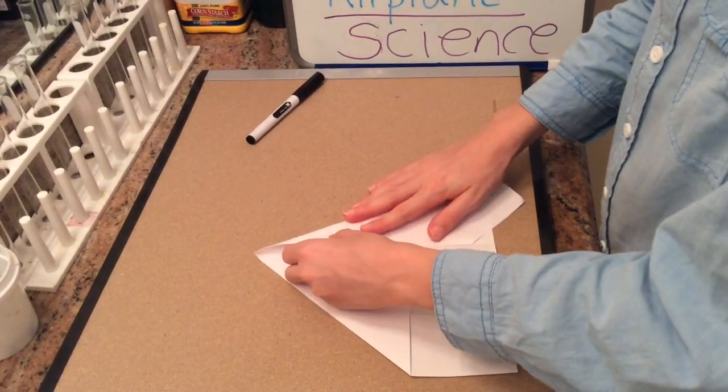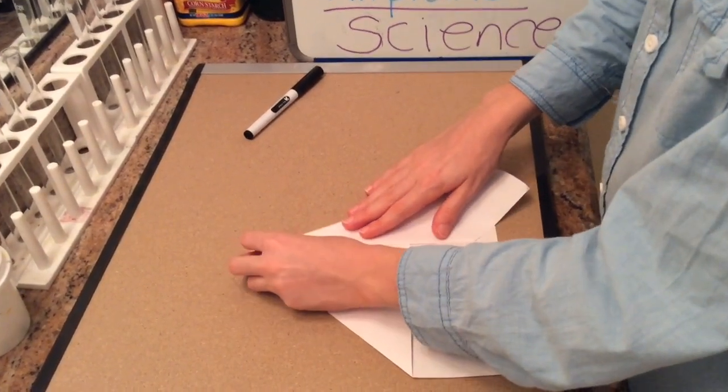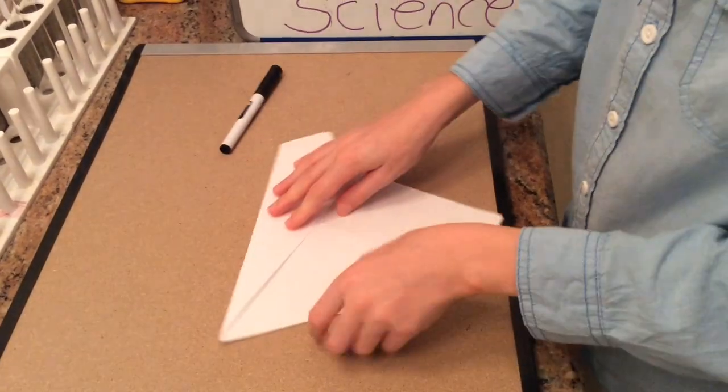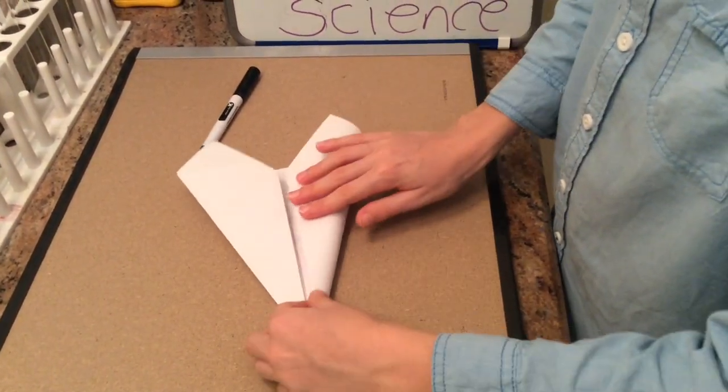Now we repeat, fold down to the center line and crease. Sometimes it helps to rotate the plane a little bit.